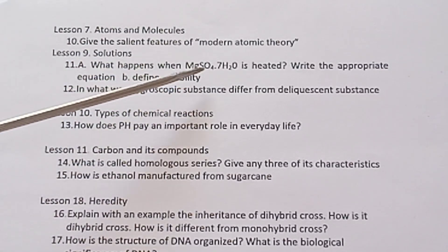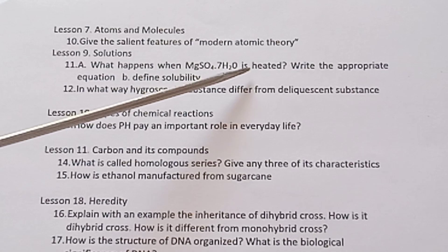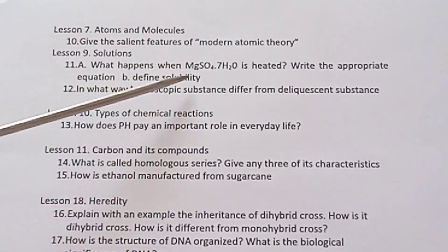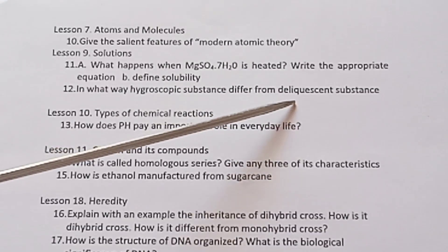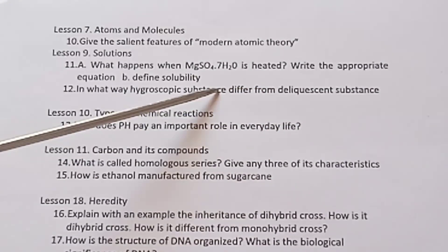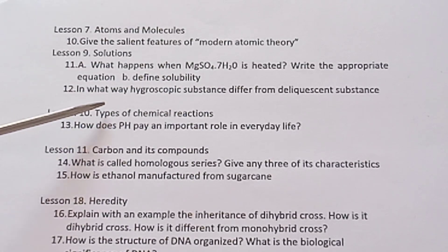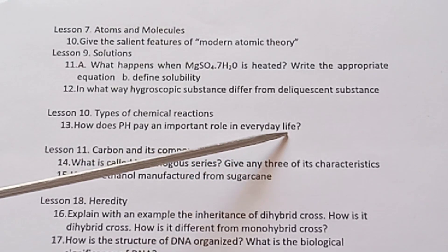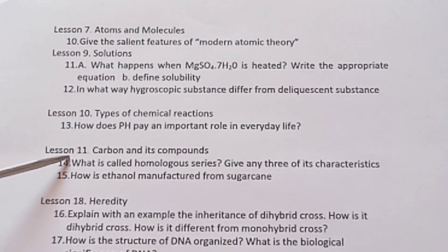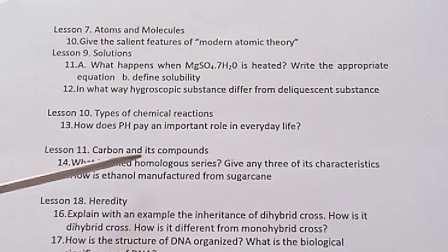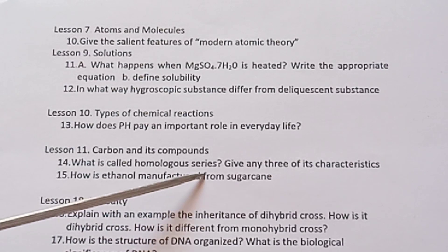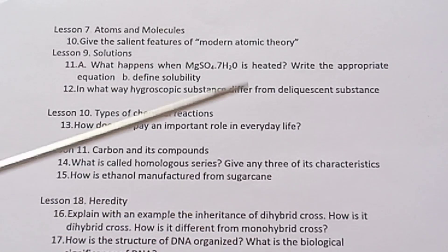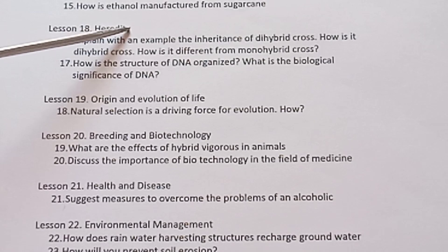Lesson 9 Solutions. What happens when magnesium sulfate solution molecule is heated? Write the appropriate equation. Define solubility. In what way does hygroscopic substance differ from deliquescent substance? You have to write tabulation. Lesson 10 Types of Chemical Reactions. How does pH play an important role in everyday life? Lesson 11 Carbon and Its Compounds. What is a homologous series? Give any three of its characteristics. How is ethanol manufactured from sugarcane?